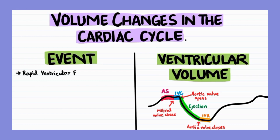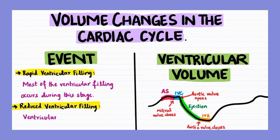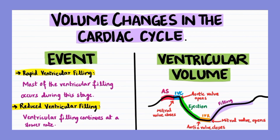The filling phase of the cardiac cycle involves rapid and reduced ventricular filling. Most of the ventricular filling occurs during rapid ventricular filling, whereas during reduced ventricular filling, the filling occurs at a slower rate. The mitral valve opens before the filling phase begins, and the area highlighted in purple on the graph represents the filling phase.